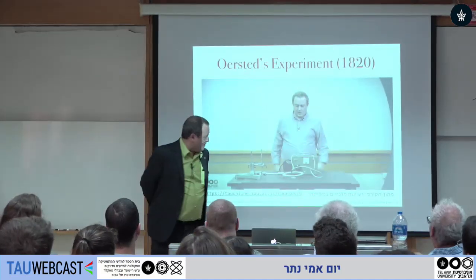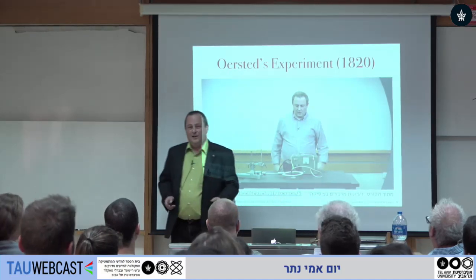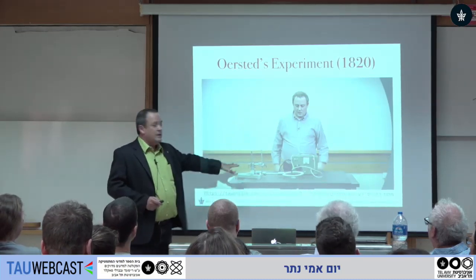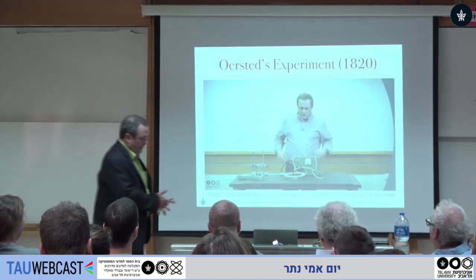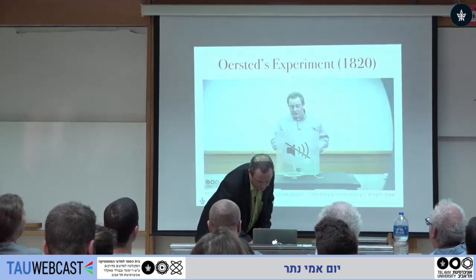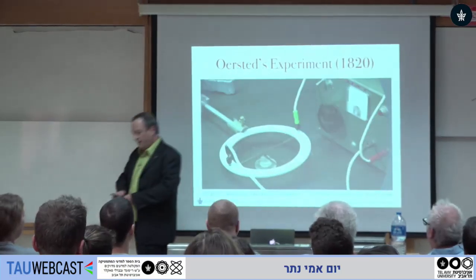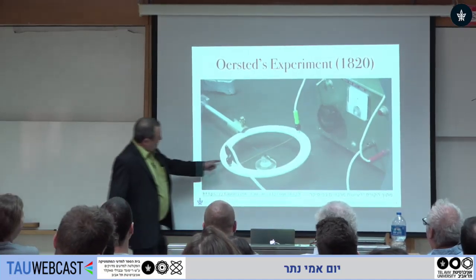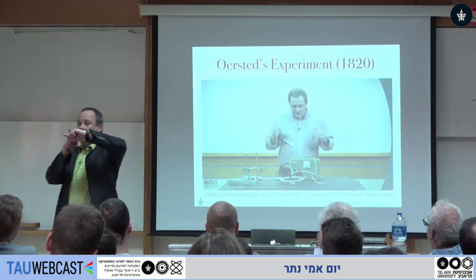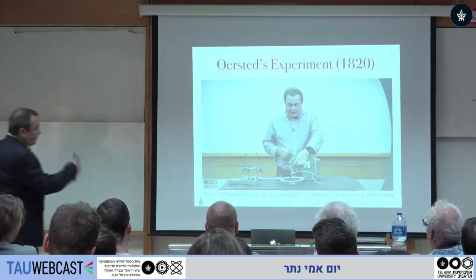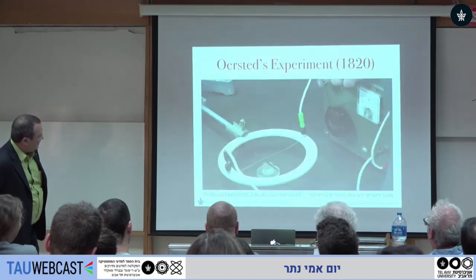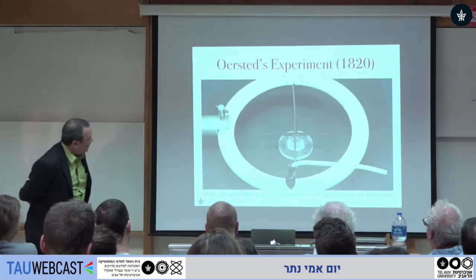I couldn't bring the demonstration here, so I brought a video to demonstrate — it's in Hebrew. Essentially, I'm going to perform the experiment in the way we analyzed it. The magnetic needle can go only one way. I set the direction of the current to be normal to it, as we said we should. I flip the switch — and I'm very surprised that nothing is happening. I check the equipment; the ammeter shows current is going through the wire, but nothing happens.